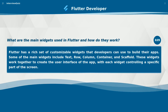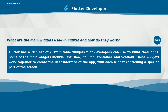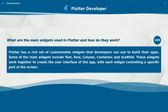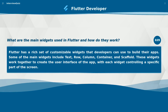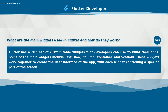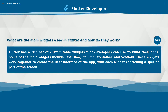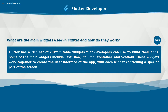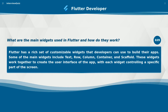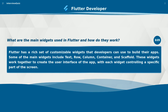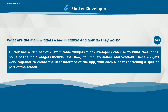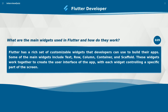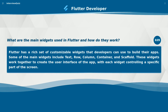What are the main widgets used in Flutter and how do they work? Flutter has a rich set of customizable widgets that developers can use to build their apps. Some of the main widgets include text, row, column, container, and scaffold. These widgets work together to create the user interface of the app, with each widget controlling a specific part of the screen.